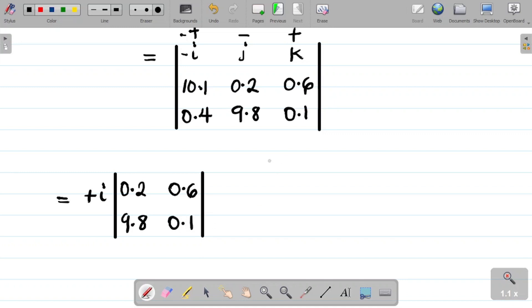If I do that I would have, it becomes 0.2, 0.6, 9.8, and then 0.1. Next one there is minus, that's minus j. So I'll have minus j into. For j I'll close the column as well as the row of j and see what I get.